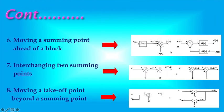Moving a summing point ahead of a block: Here, X(s) is a signal and R(s) into G(s) gives C(s) equal to R(s) into G(s) minus X(s). When this summing point moves before the block, this is R(s) and this signal is X(s). If we multiply 1 by G(s), then this signal is R(s) minus X(s) by G(s), and C(s) equals this difference into G(s), yielding the same signal.